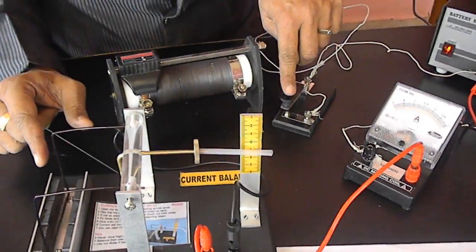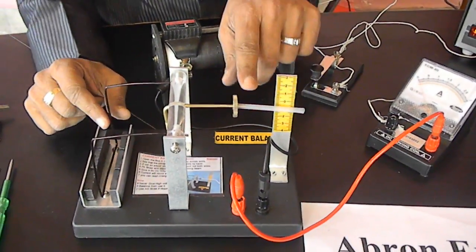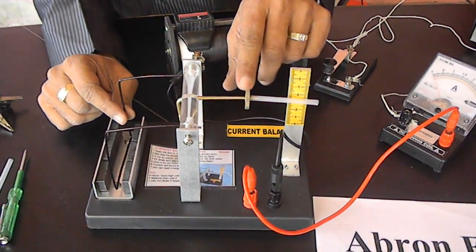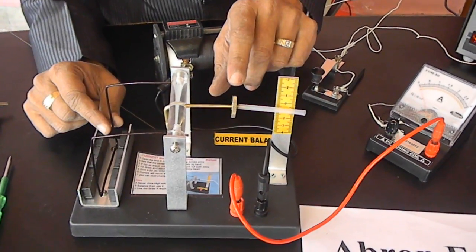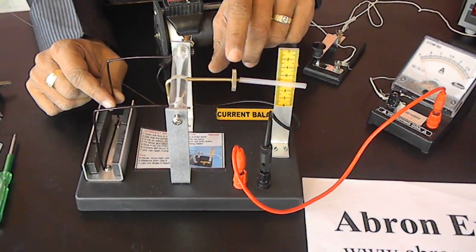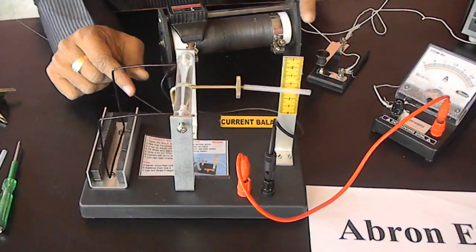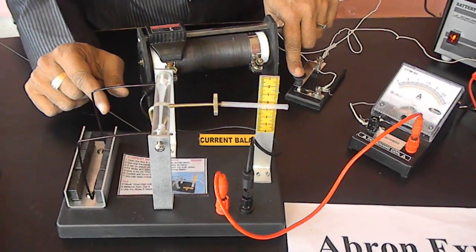When you press it, the moment is there. It can be on the other side; you can adjust the moment. It comes to the other side. Now it is close to this magnet.